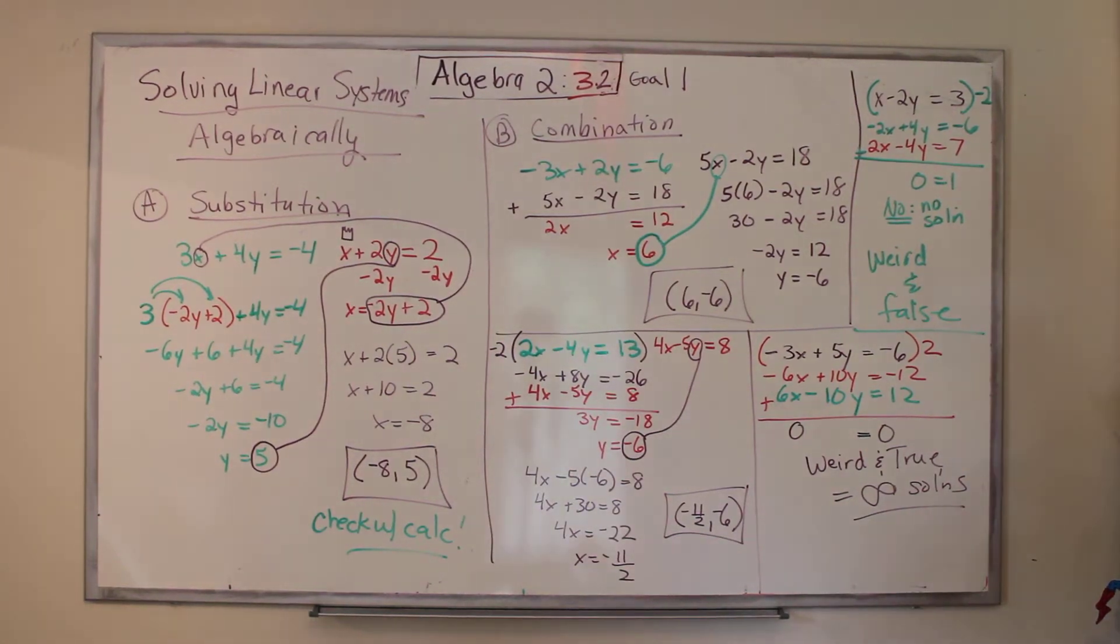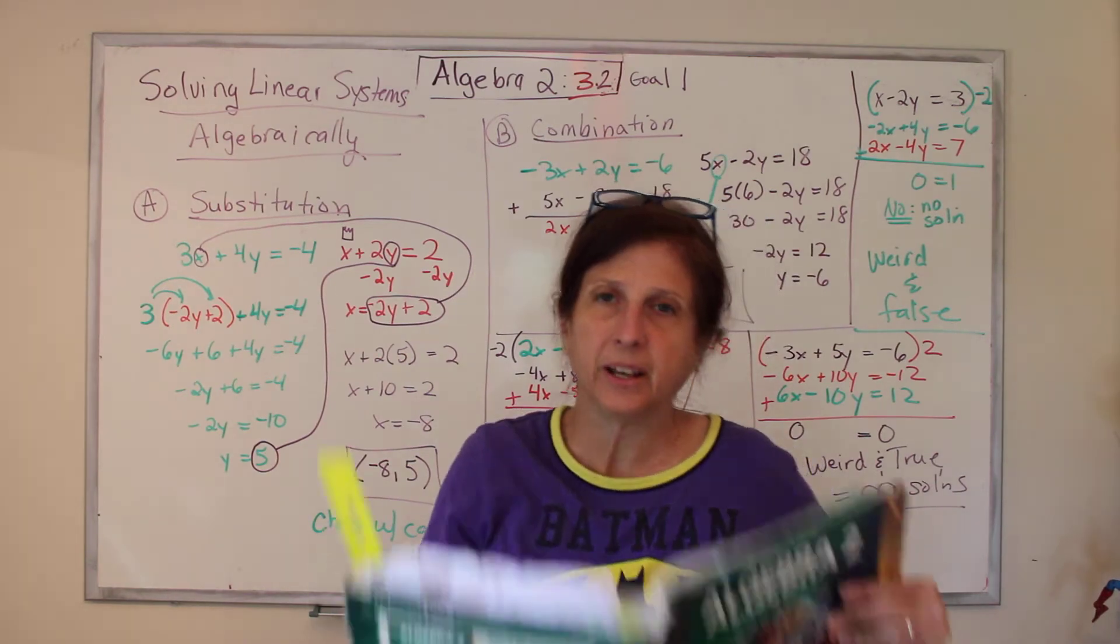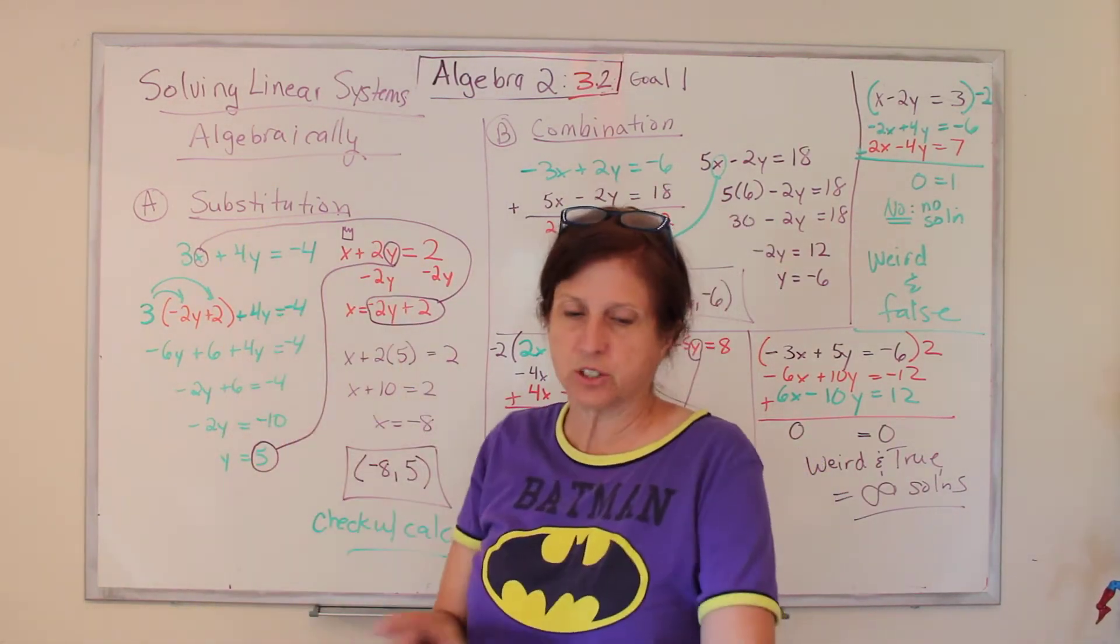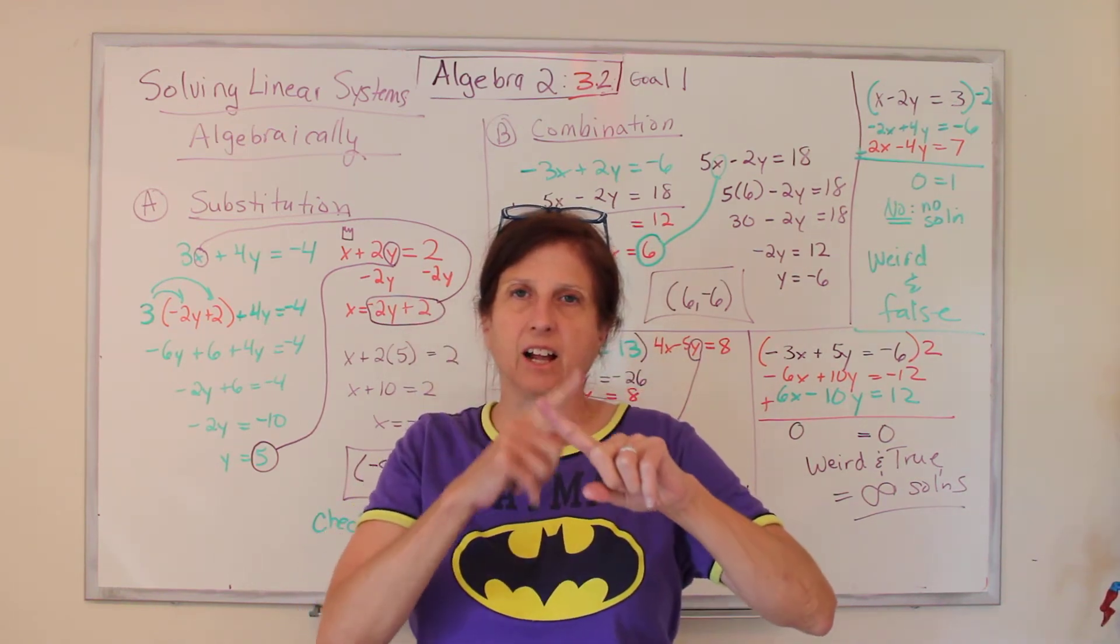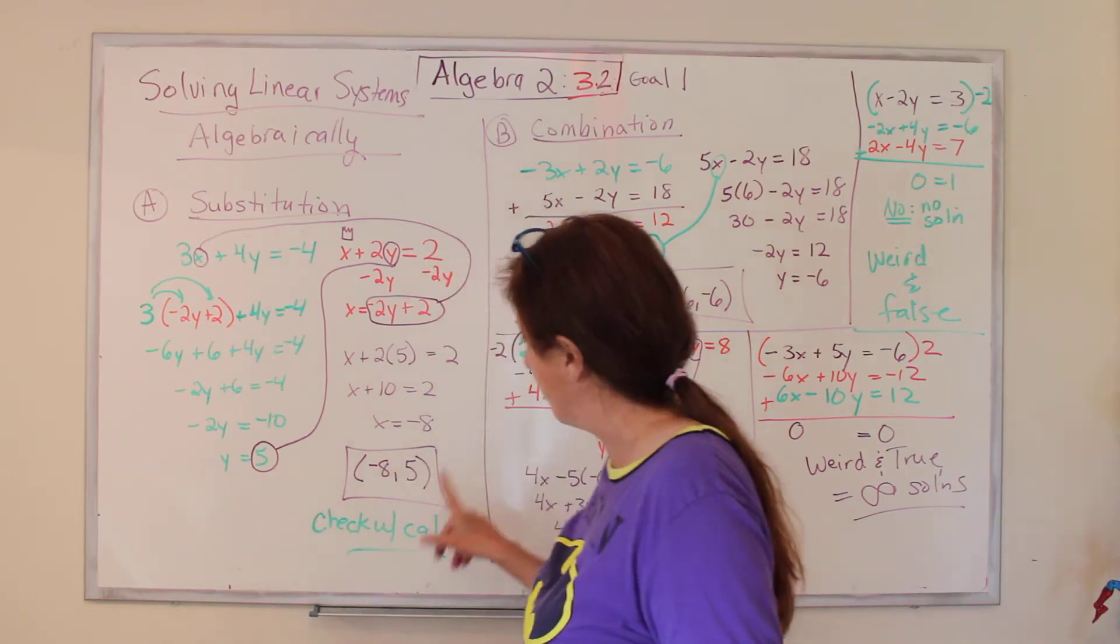Welcome back to Algebra 2, Chapter 3, Section 2 in this book. And we're talking about linear systems. Two lines, where they cross, the solution is the answer is considered that point that they cross out, the ordered pair.